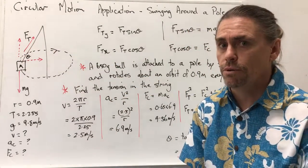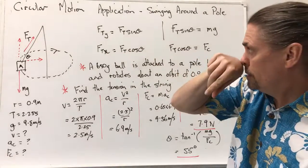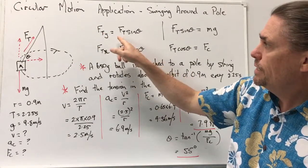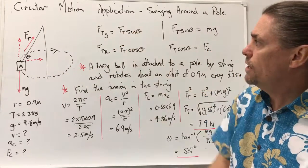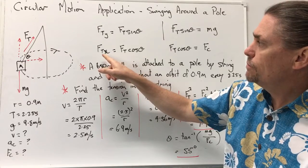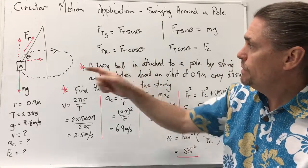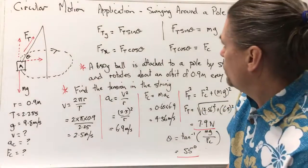So let's look at those two relationships. First of all, in the y direction, we have Ft_y, because we've got this angle theta in here, will be equal to Ft sin theta. And in the horizontal direction, we'll have Ft_x, which will be equal to Ft cos theta.